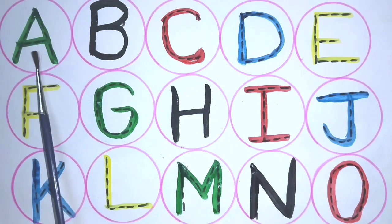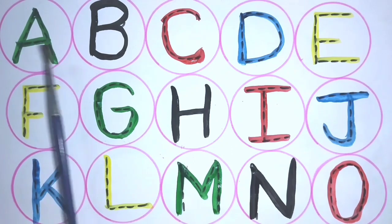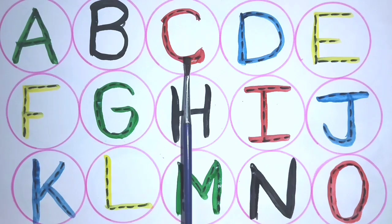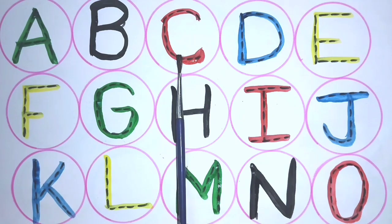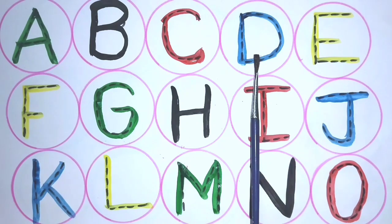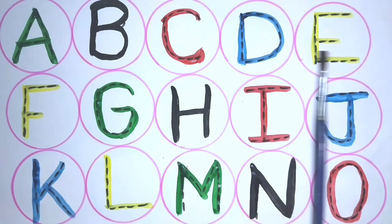A. A for arrow. B. B for ball. C. C for cat. D. D for dog.